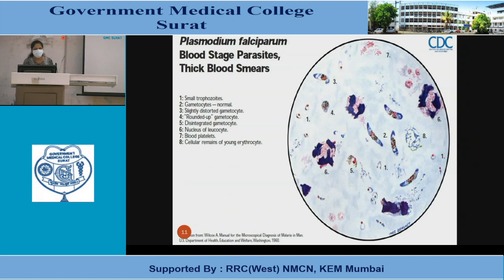This figure shows Plasmodium falciparum blood stages in a thick blood smear. The numbered features are: 1 — small trophozoite; 2 — gametocytes; 3 — slightly distorted gametocytes; 4 — rounded up gametocytes; 5 — disintegrated gametocytes; 6 — nucleus of leukocyte; 7 — blood platelets; 8 — cellular remains and an erythrocyte. These are the various features of Plasmodium falciparum.